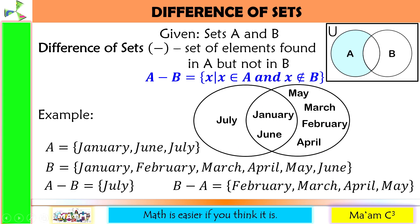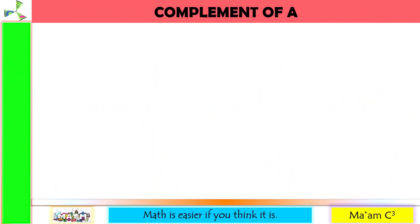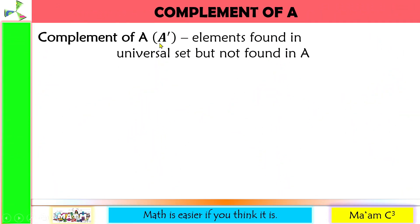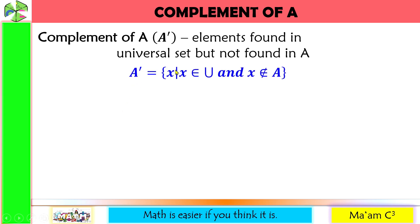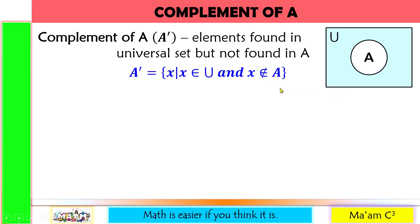The last set relationship we are going to discuss is the complement of A, denoted by A prime. It refers to the elements found in the universal set but not found in set A. The set builder notation is: A prime is the set of all X such that X is an element of the universal set and X is not an element of A. The Venn diagram for complement of A shows the elements in the universal set but not in set A.